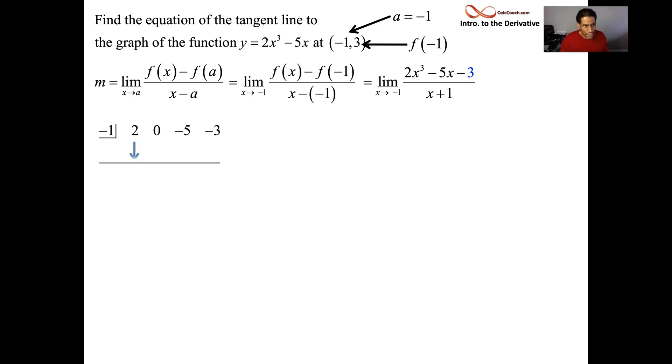Copy down the first coefficient. Anytime you get something that's underneath the line, you multiply by the root and put it in the next spot up and to the right on the diagonal. So 2 times negative 1 is a negative 2. Add vertically, get a negative 2. Times that negative 1 is a 2. Add vertically, get a negative 3. Times that negative 1 is a 3. You know you've done it right. This should be a 0.